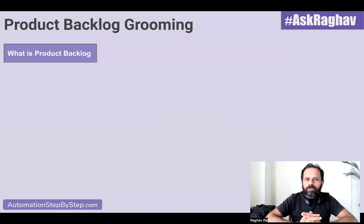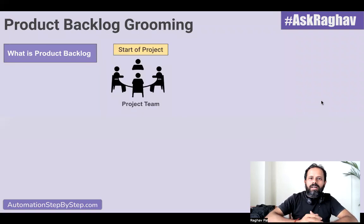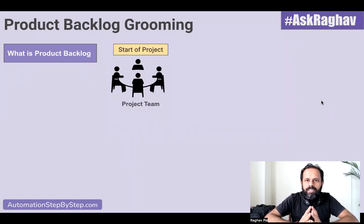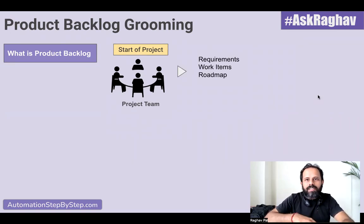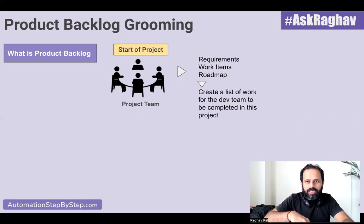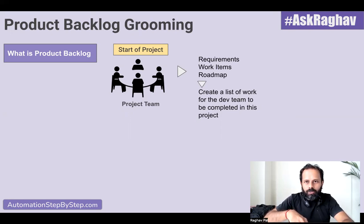So let us discuss what is product backlog first. Now in a team, in a project, at the start of the project, the team members meet and then they discuss what are the requirements of the project, what are the user stories. They discuss all the requirements, all the work items, and create a roadmap for this project. And in this meeting, they create a list of items, a list of work for the dev team to be completed in this particular project.